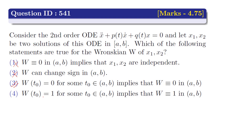Option 4 says: Wronskian at t0 is 1 for some t0 belonging to open interval (a, b) implies the Wronskian is 1 in open interval (a, b). For this, let us take an example. We know that the Wronskian at t is equal to the Wronskian at t0 times e to the power of the integral of P(t) dt. Since the value of the Wronskian at t0 is 1, this implies the value of the Wronskian at t depends upon the function P(t). There exist so many functions for which the Wronskian is not equal to 1. This implies option 4 is not correct.